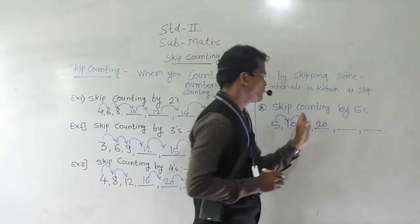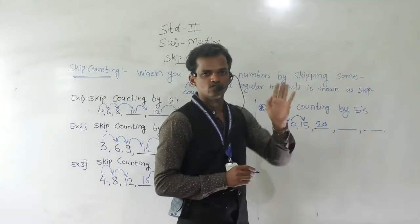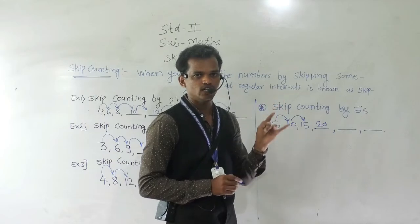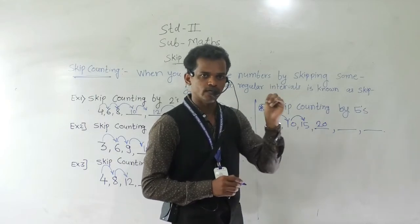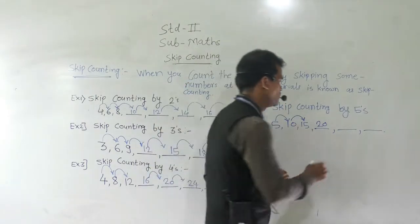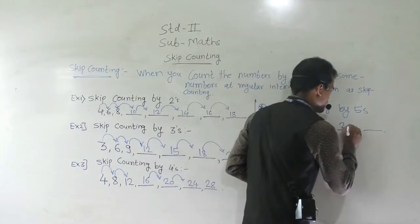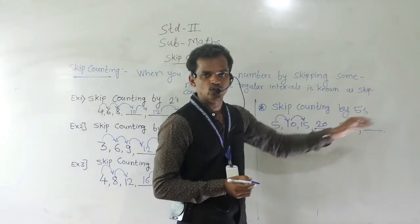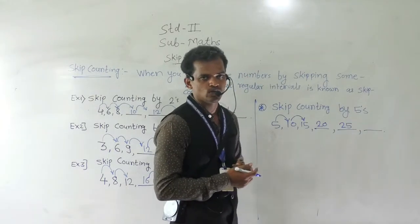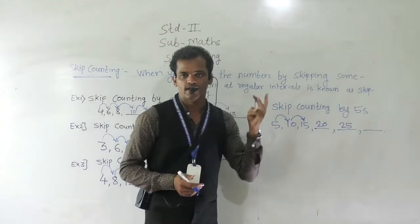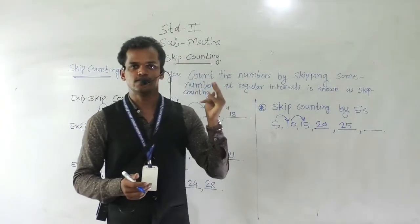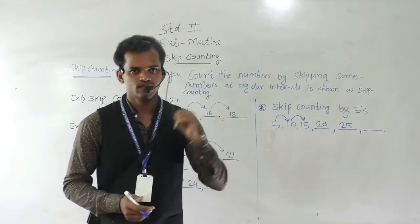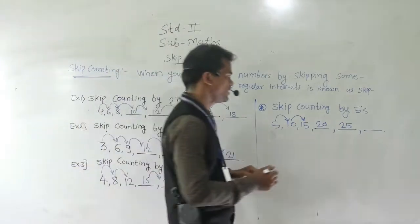Then 20 plus 5: 21, 22, 23, 24, 25. And again add 5 into 25: 26, 27, 28, 29, and 30. So this is the example of skip counting by 5.